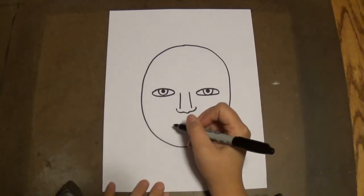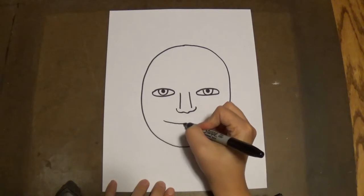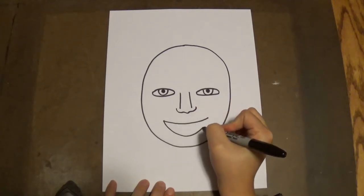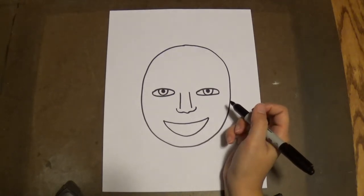And then you're going to draw your mouth. You can draw yourself with a nice big smile. Two curved lines to make like a half circle. Just like that.